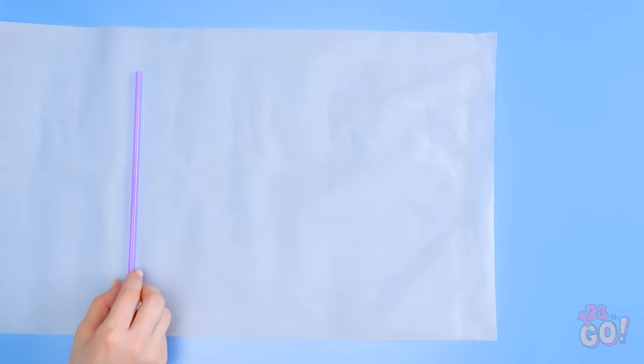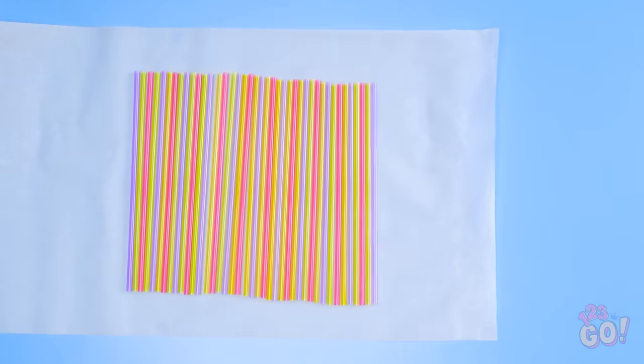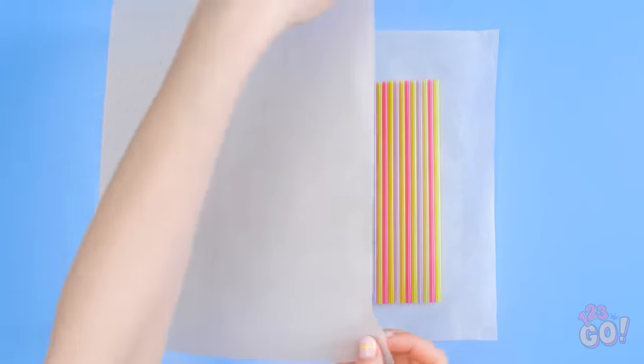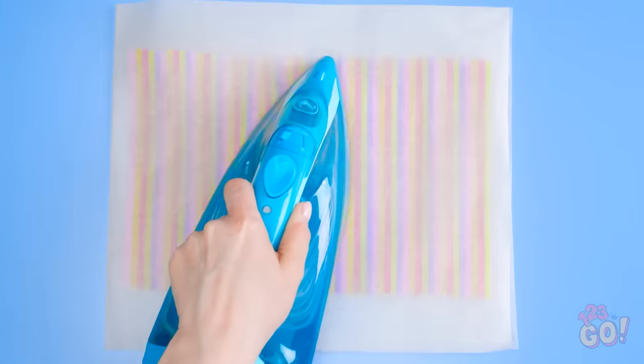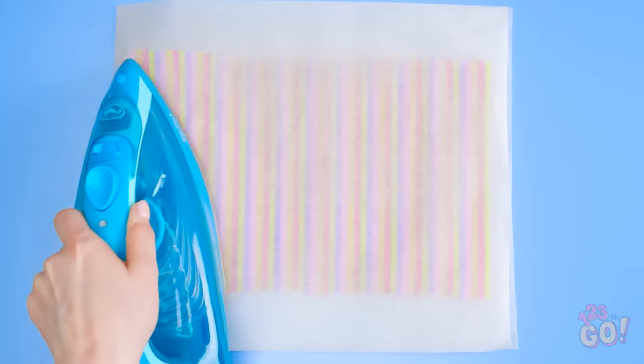Take some parchment paper and line up a bunch of straws on top. The more colors, the better! Then fold the paper back over and rub an iron over the top. After a minute or two, lift the paper.